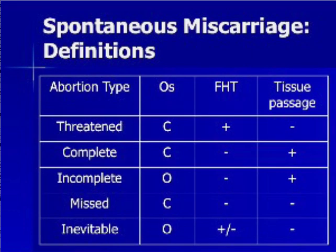Threatened miscarriages are very common: the cervical os is closed, fetal heart tones are present, and there is no fetal tissue passage. Fetal viability is possible after threatened miscarriage. Complete, incomplete, missed, and inevitable miscarriages virtually ensure no fetal viability. Complete miscarriages involve an already passed fetus and closed os; incomplete involves a partially passed fetus and open os in the midst of aborting. Missed miscarriages mean the fetus is non-viable but no tissue has been passed and the uterus has not yet opened. Inevitable miscarriages are similar to missed except that the os is open.